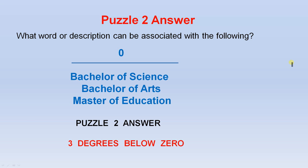The answer to puzzle two: three degrees below zero. So have a close look at the puzzle and I'm sure you can work out why that's the answer.